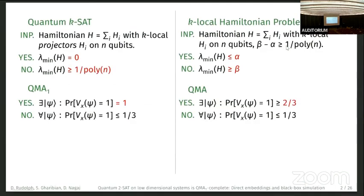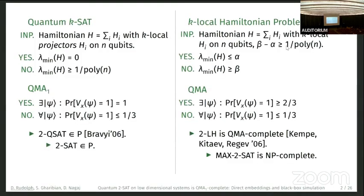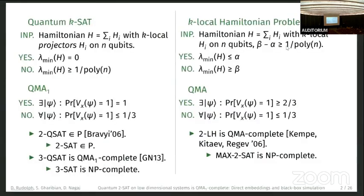These problems are complete for QMA1 and QMA respectively. For example, two-SAT is in P by Bravyi, same as classical. The two-local Hamiltonian is QMA-complete — the classical analog being MAX-2-SAT which is NP-complete. For three QSAT, we know it is QMA1-complete by Gosset and Nagaj, and three-SAT is NP-complete of course.